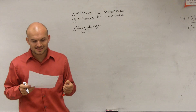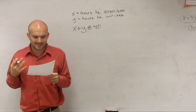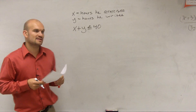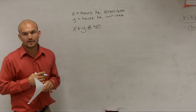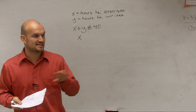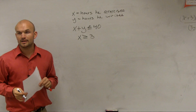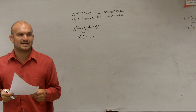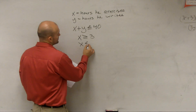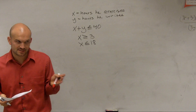He wants to exercise at least 3 hours per week, so x has to be greater than or equal to 3 — he can exercise more. But it cannot be more than 18, so x also has to be less than or equal to 18. It didn't say he can't exercise exactly 18 hours, just that he can't go over 18.